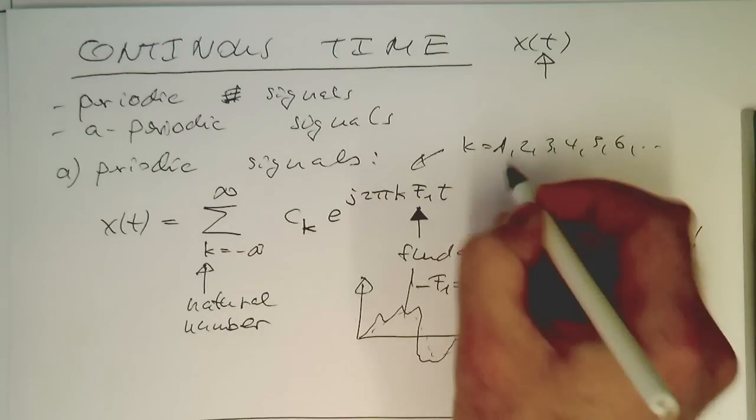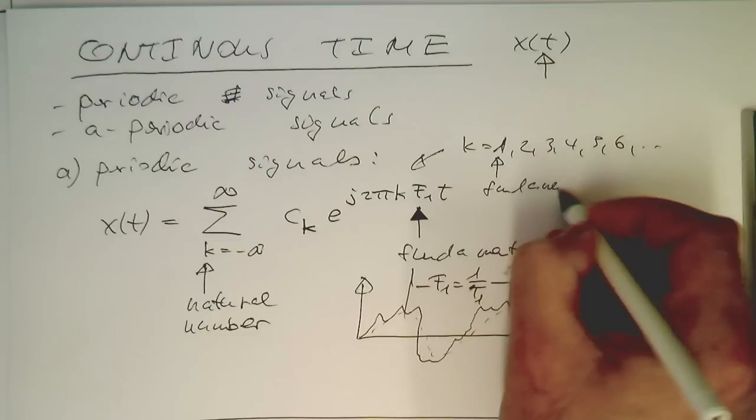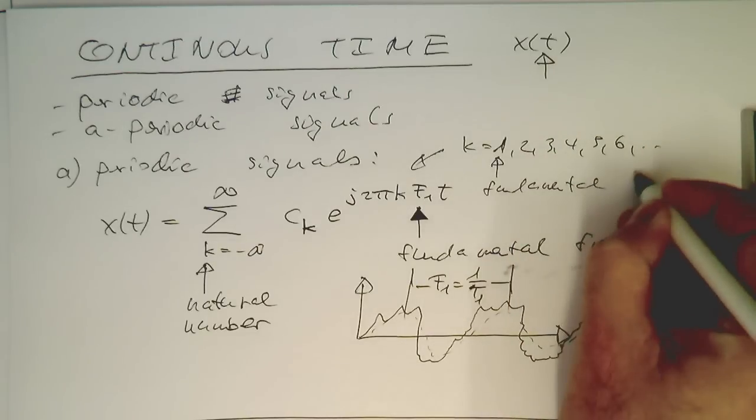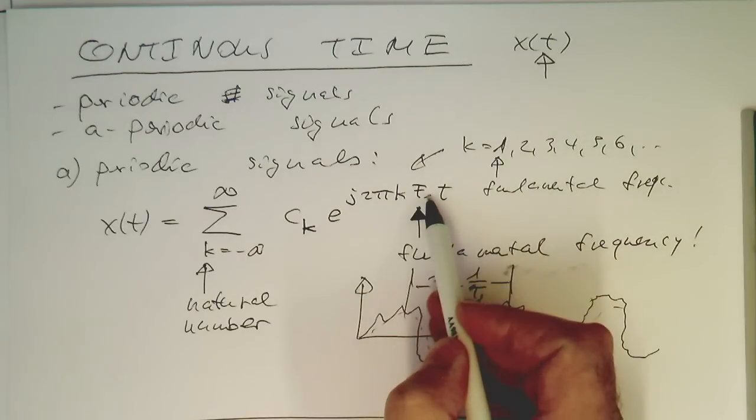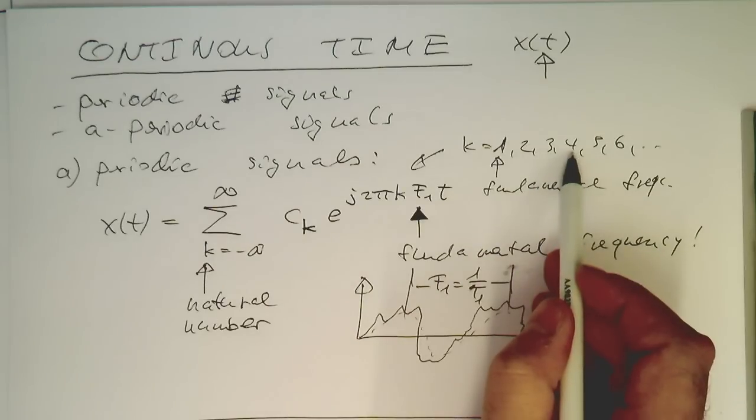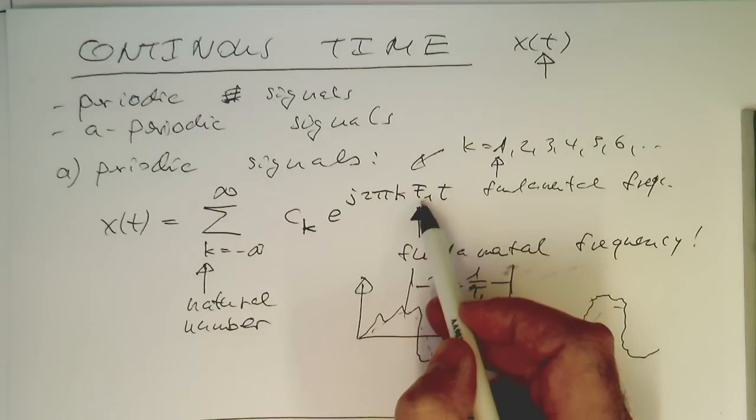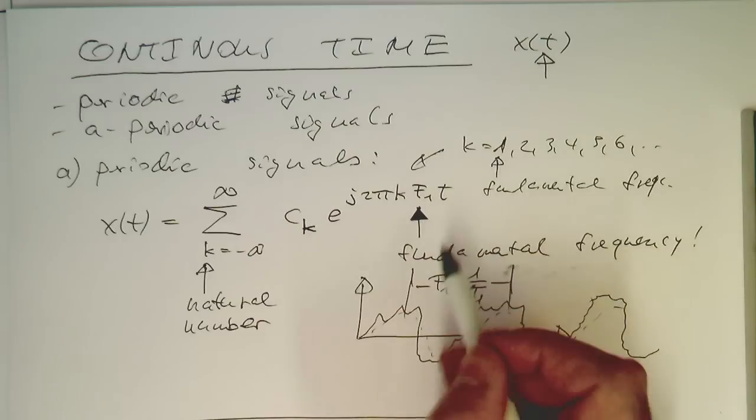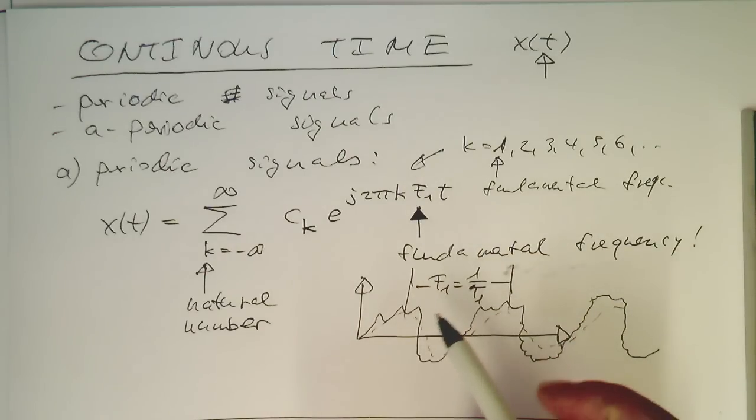For k equals 1, this is our fundamental frequency. Two means we've got two times the frequency, three times the fundamental frequency, four times, and so on. Therefore, all frequencies beyond this are multiples of the fundamental frequency. That's quite a surprising result to keep in mind. In the assignment, we have a classical example of that.